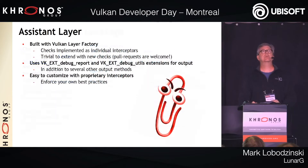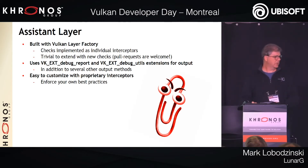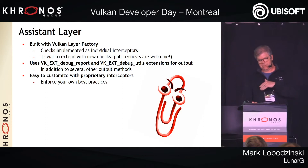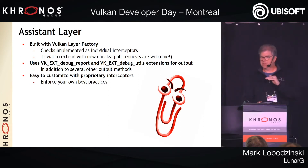The assistant layer is built using the layer factory. It uses the standard output things that the other validation layers use — debug report and debug utils — so if you have debug callbacks already in your application, they'll still work with the assistant layer. Because it's done on the layer factory, it's easy to add your own checks. You can take the built-in set and add internal guidelines or rules for your own organization.